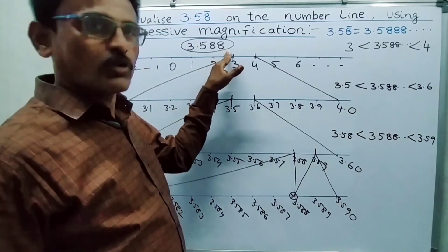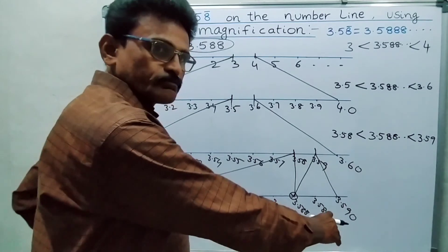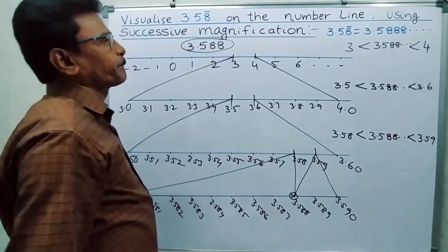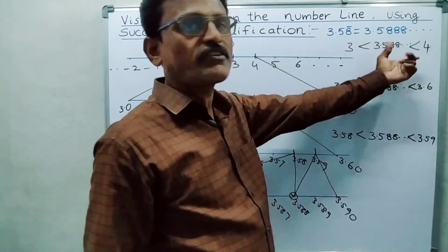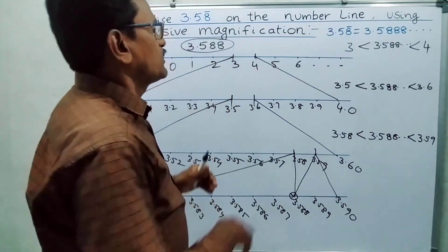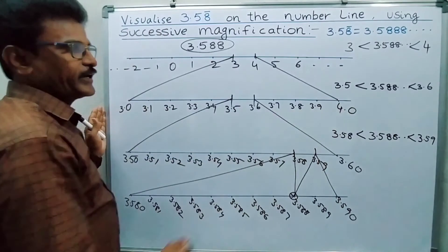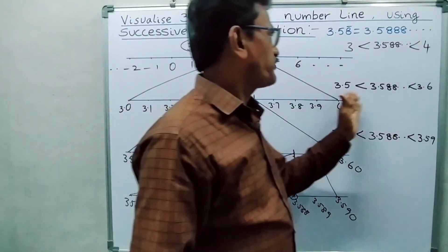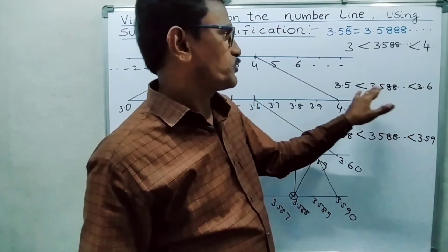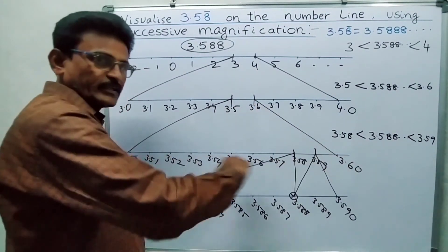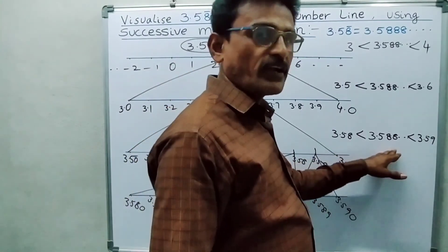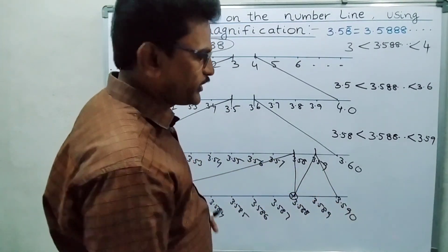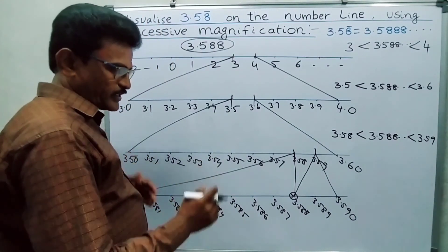Suppose up to 4 decimal places — once again you have to take the digit 8 and divide into 10 equal parts again, and like that you continue. But up to 3 decimals I have finished. First, 3.5888... lies between 3 and 4, so mark 3 and 4. Divide into 10 equal parts and mark 3.5 and 3.6, because it lies between 3.5 and 3.6. Again divide into 10 parts: it is greater than 3.58 but less than 3.59. Divide 3.58 to 3.59 into 10 equal parts, and finally we get 3.588 on the number line.